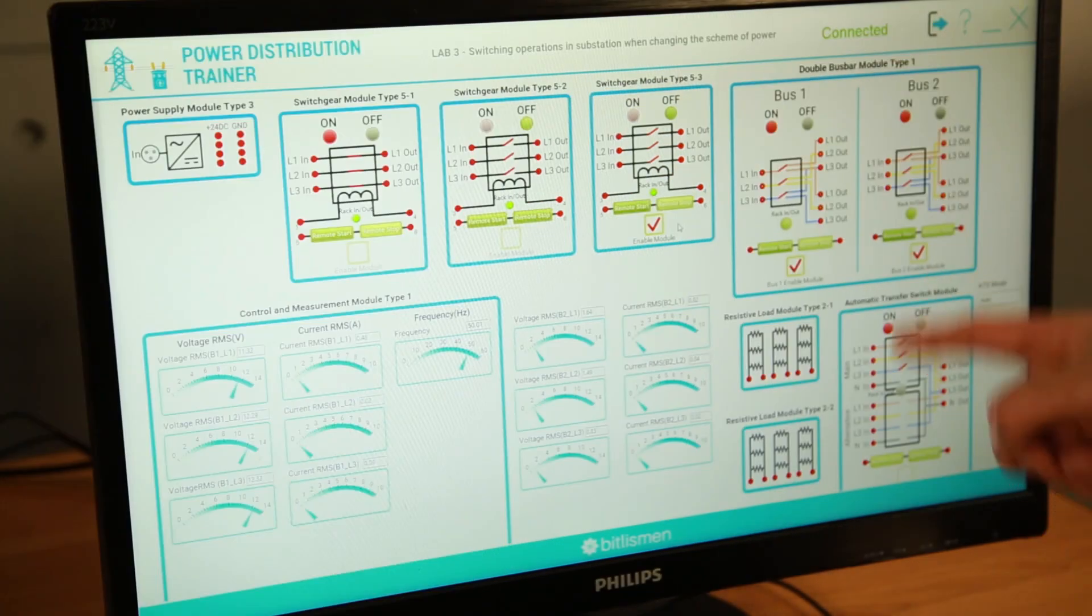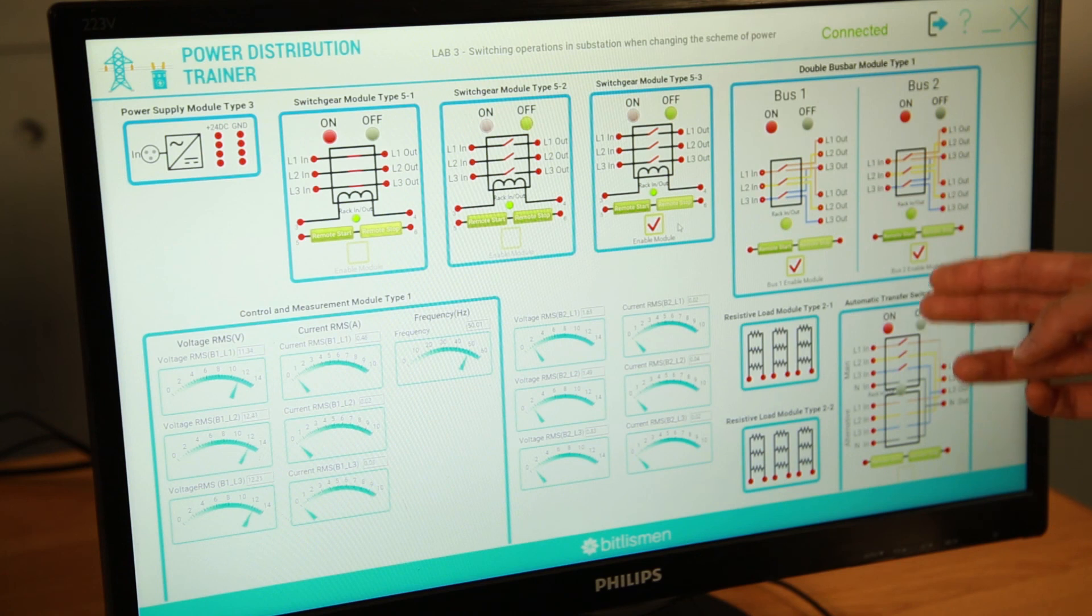Here you could see that the system detected that the grid was disconnected and the ATS switched it to the alternative source.